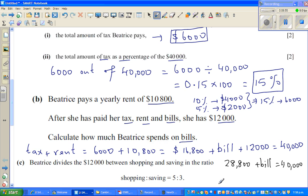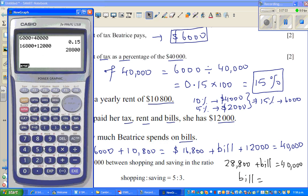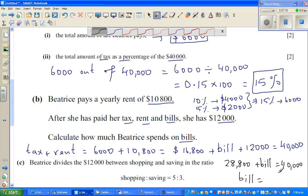So $28,800 plus bill should give you the total amount. If you take away $28,800 from $40,000, you'll get the bill. So bill would be $40,000 take away $28,800, which is $11,200 is for bills.